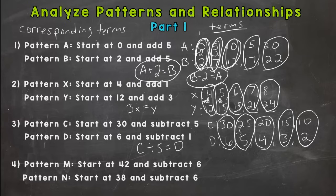Or the opposite would be, if we multiply pattern D by 5, we'll get pattern C. Remember, a number next to a letter means multiplication. And let's end with number 4 here. So we start at 42. Oops, I didn't label my pattern. This is M. And we subtract 6. So 42, 36, 30, 24, and 18. And then let's do pattern N.